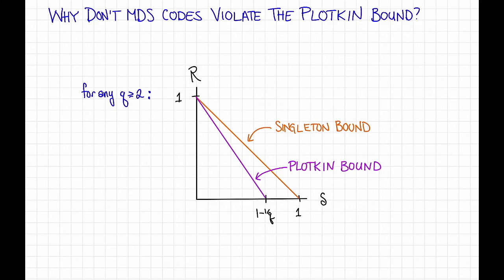The secret is that this picture holds for any fixed Q. But for Reed-Solomon codes, the alphabet size Q is not fixed. It's actually growing with the block length N. This is a downside of Reed-Solomon codes, and in later videos, we'll see some ways to try to make the alphabet size smaller.